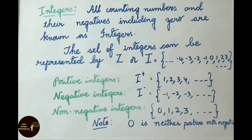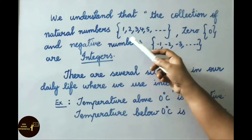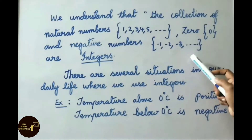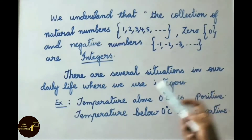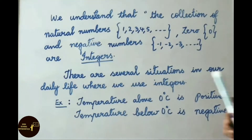Non-negative integers are 0, 1, 2, 3, and so on. Remember: 0 is neither positive nor negative. The collection of natural numbers, 0, and negative numbers together are called integers. There are several situations in daily life where we use integers — for example, temperature above 0°C is positive and temperature below 0°C is negative.